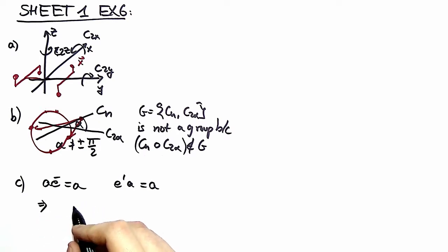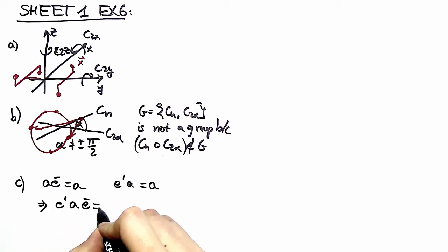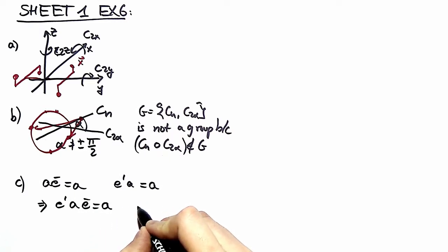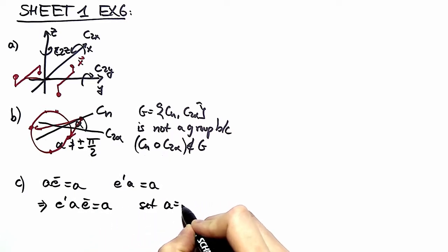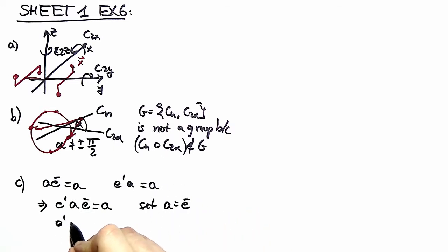So we're allowed to write e prime a e bar equal to a. Now we make a useful choice, namely we set a to e bar, and this equation reduces to e prime e bar equal to e bar. This is equivalent to saying e prime is equal to e bar.